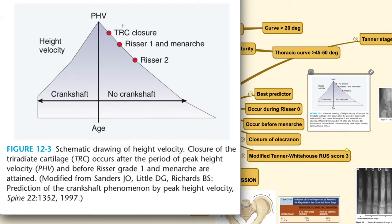That is why during physical examination, you would generally ask the patient when her menstrual periods began. You would also take a pelvic radiograph to evaluate for the Risser sign or signs of triradiate closure, because if you see these signs, then the patient has already gone through the phase of peak height velocity.